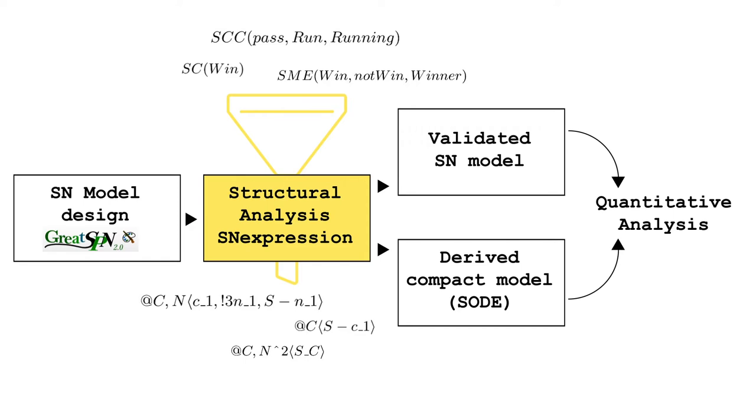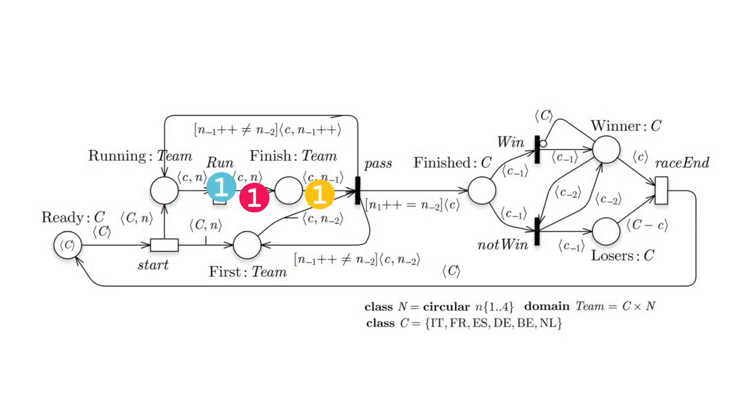Let's see two examples. The first use case is a model of a relay race. Tokens of different colors, representing the teams and the running order of the athletes, circulate between places running and finish, until the fourth runner reaches the end moving to place finished. The first team reaching this place wins the race.